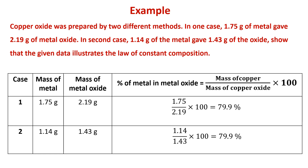For Case 1, the mass of metal is 1.75 grams and the mass of metal oxide is 2.19 grams. The percent of metal in the metal oxide equals mass of copper divided by mass of copper oxide, multiplied by 100. For the first case, this is 1.75 divided by 2.19 multiplied by 100, which gives 79.9%.